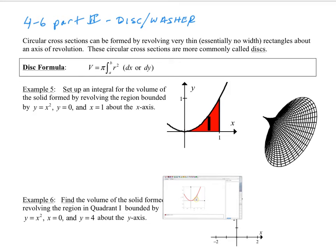Now for 4.6 part 2, disk and washer. Circular cross-sections can be formed by revolving very thin rectangles about an axis of revolution.